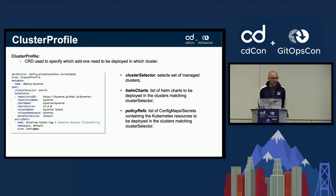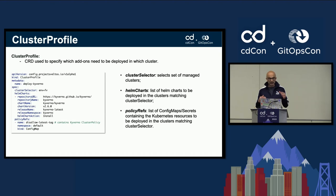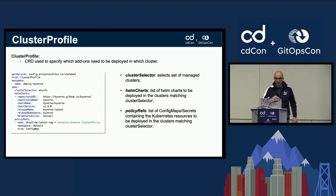The ClusterProfile is the CRD introduced to instruct Sveltos on what to do. It has three main fields in the spec section. First, the cluster selector, which is a simple Kubernetes label selector — in this example, selecting all clusters with label environment equals FVT (functional verification test). Second, a Helm chart section where you can list all the Helm charts you want to deploy. Third, a policy ref, which points to ConfigMaps and Secrets whose data sections can contain Kubernetes YAML resources. So Sveltos can take any resources in a ConfigMap or Secret and deploy them in the cluster along with the Helm charts.